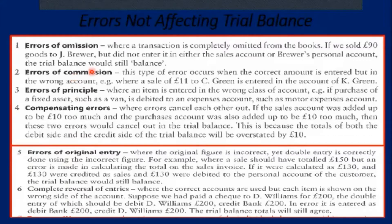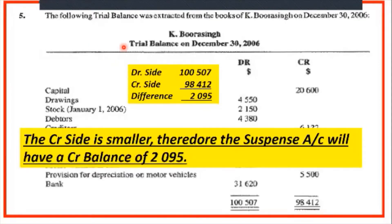The problem we are going to work here has both types of errors and we will see how we are correcting them. So we have the trial balance extracted from the books of K. Bura Singh and we have his balances here. If you notice, the trial balance does not agree — it is unbalanced. But this trial balance has both types of errors: the first six kinds as well as the next three kinds. Some will be corrected with a journal entry and some with the suspense account.